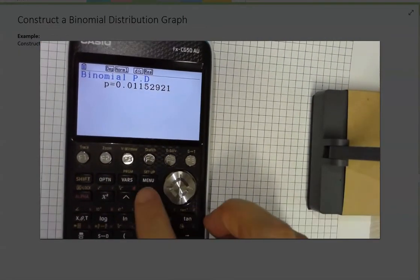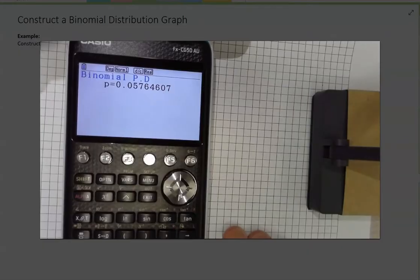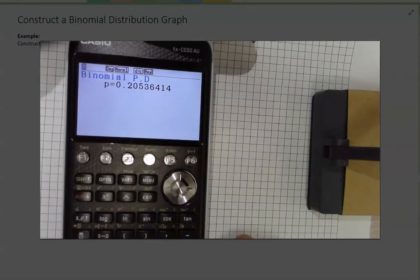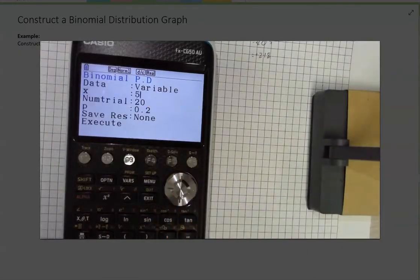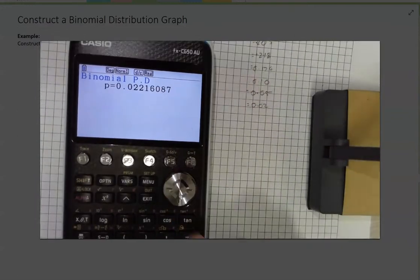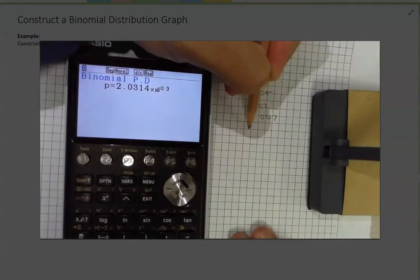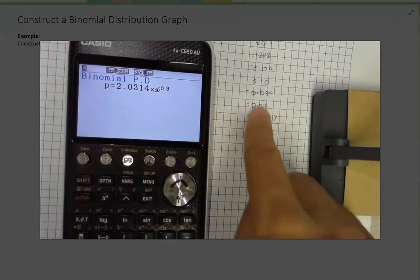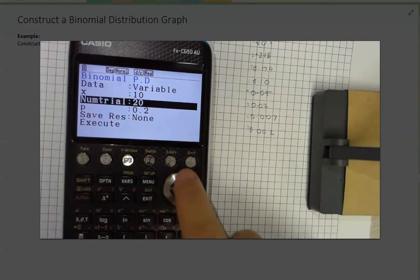Okay, I'm just going to do that for a bunch of these now. Okay, and you can see those numbers are getting very, very small now and they're just going to continue to get smaller and smaller.